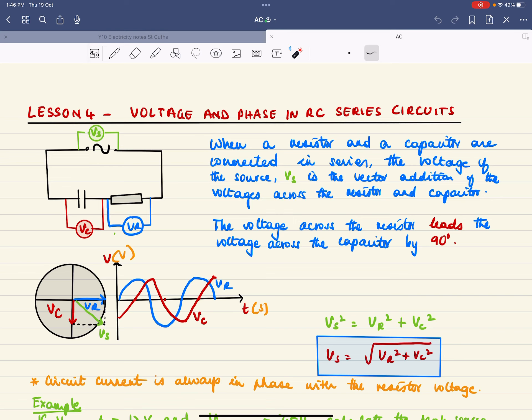When they are connected in series, the voltage of the source is a vector addition of the voltages across the resistor and capacitor. You can't add them normally; you have to use vector addition. The reason is the voltage across the resistor leads the voltage across the capacitor by 90 degrees.